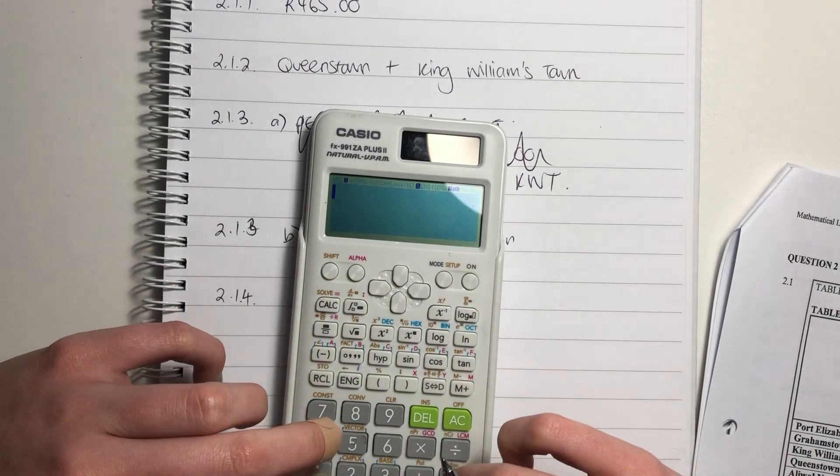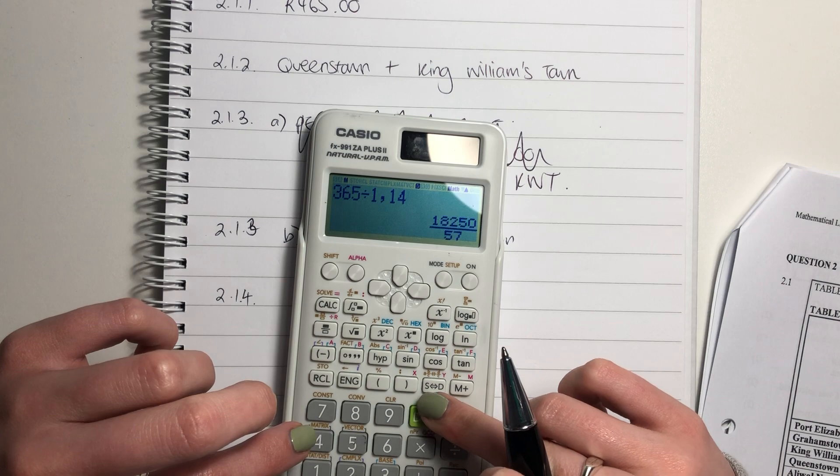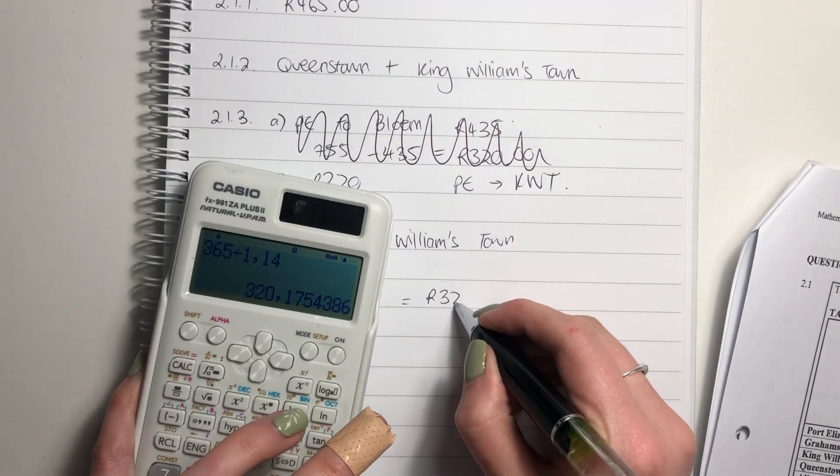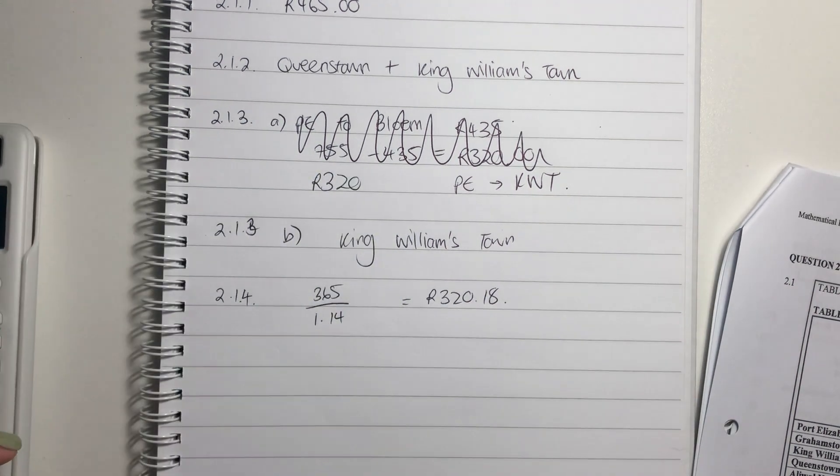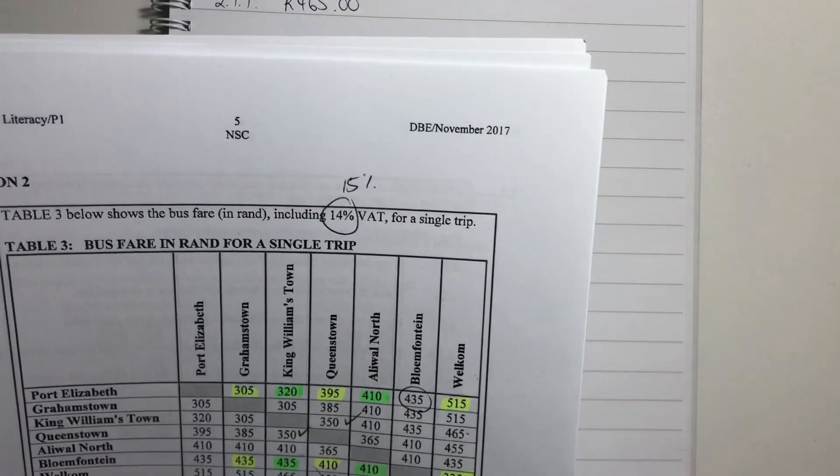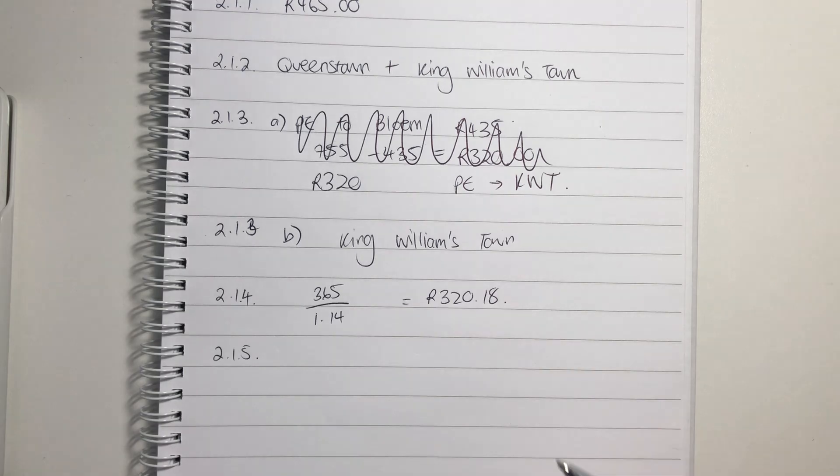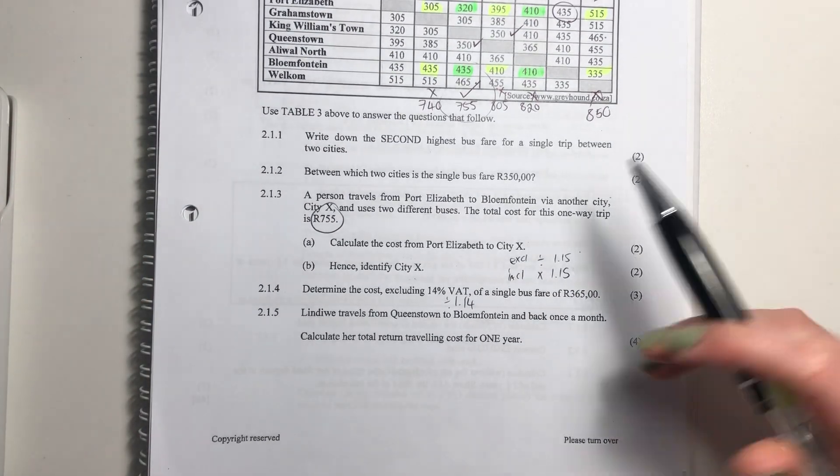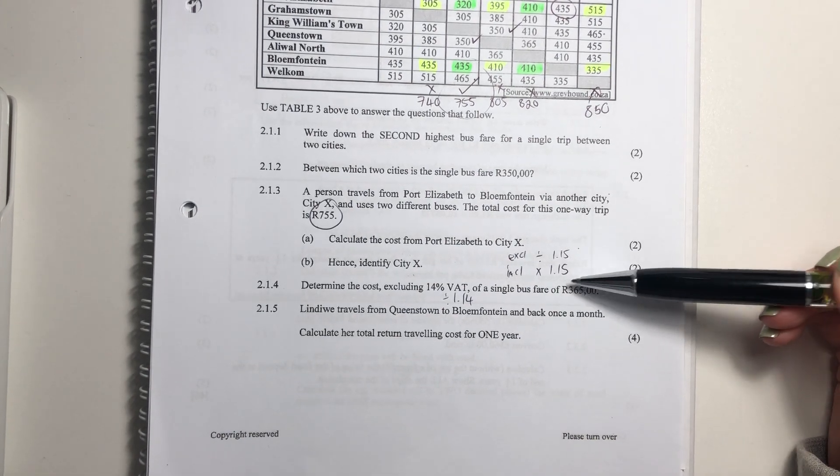Just literally put that into your calculator. 365 divided by 1.14. And it gives you 320.18. Please remember, when you're doing these questions, you must always round off, when it comes to money, to two decimal places. And that's your answer there. We have one more question for this video. And then I will do the latter half of this question. So that's that done. Please remember your units, as always.